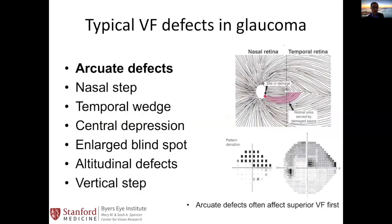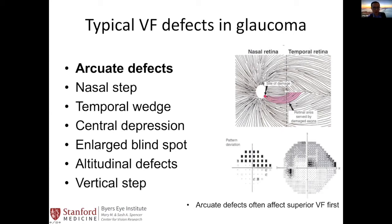The most common visual field defects we see are arcuate defects, which can also present as nasal steps and temporal wedge. In glaucoma, the visual field loss must correspond to optic nerve head findings — a superior arcuate defect must correspond with inferior thinning of nerve fibers at the optic disc. If this doesn't correspond correctly, we don't consider it to be glaucoma.